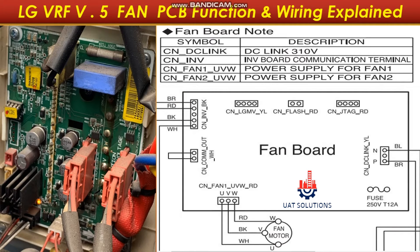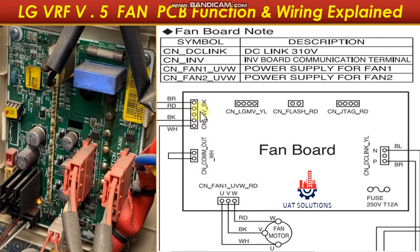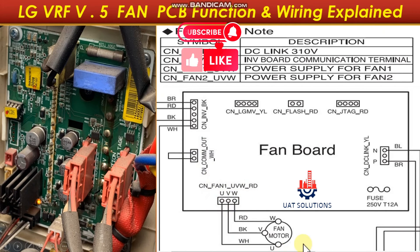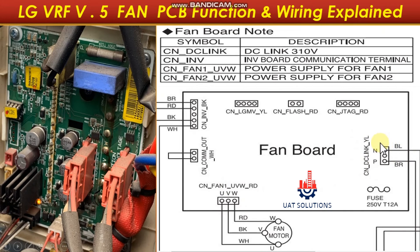Let's move to the connections of fan PCB. CNIN-VBK top 2 terminals are for 15V supply from inverter board. CNIN-VBK bottom 2 terminals are for communication to inverter board. CN-COME-OUT is jumped. Condenser fan motor is connected at CN-FAN 1. 310V DC is supplied via inverter board at port CNDC-Link YL.